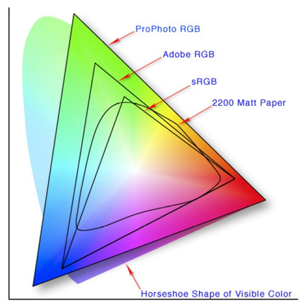Adding a specific mapping function between a color model and a reference color space establishes within the reference color space a definite footprint, known as a gamut, and for a given color model this defines a color space.